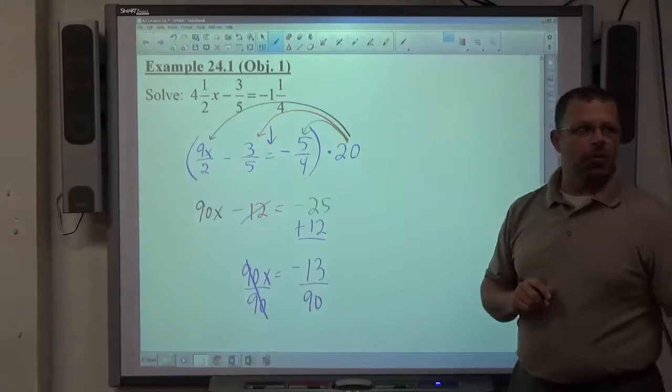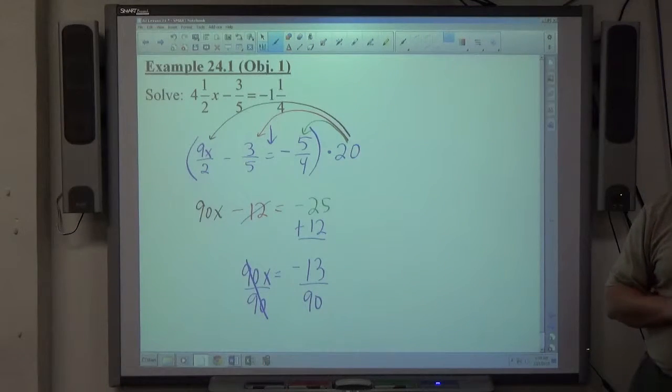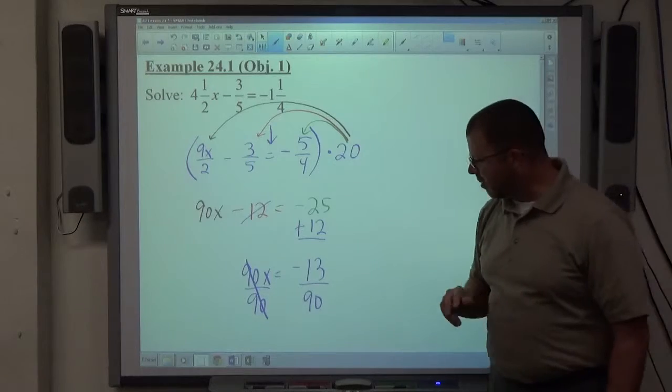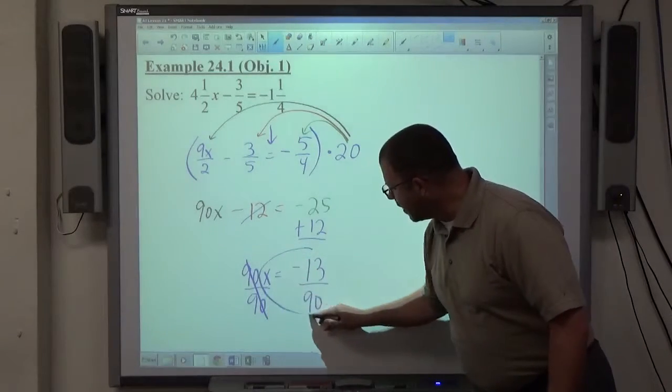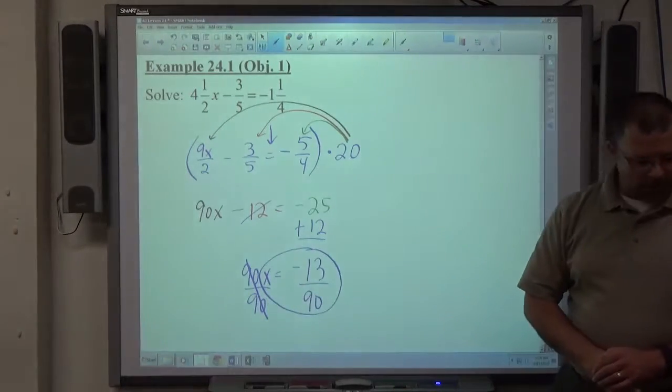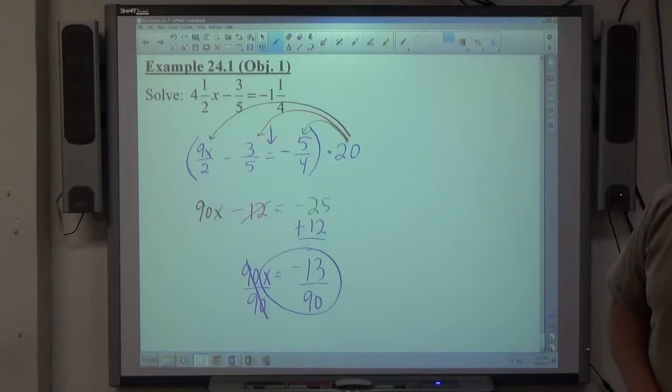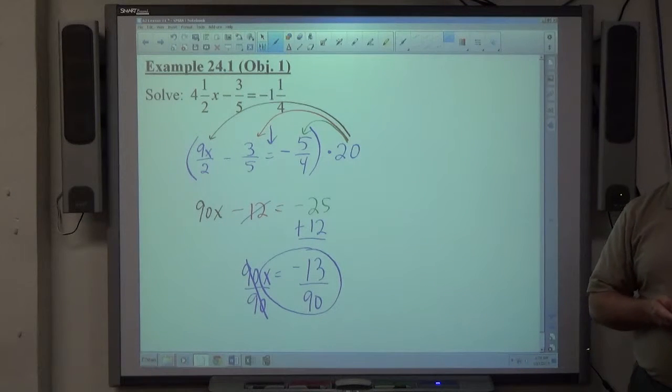Divide both sides by 90. Of course, if we could reduce that, we should, but 13 does not go into 90, and 13 is a prime number. So, that's the best I can do. Leave the answer as a fraction. Please, do not give me decimal answers.